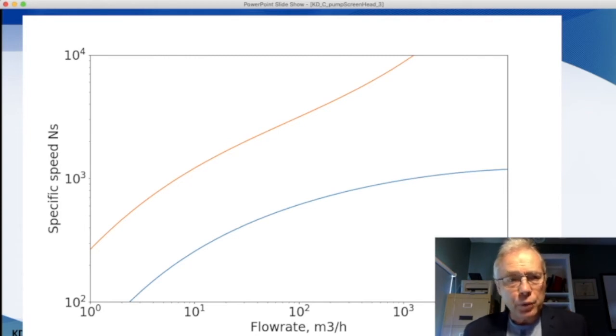Now, this map of maximum and minimum specific speed is all well and good. But how legitimate are these estimates for the constraints on the specific speed where we have a flow rate?